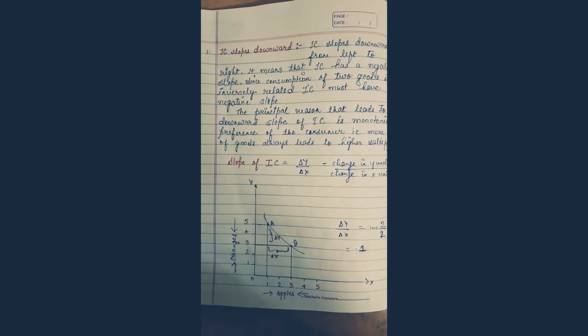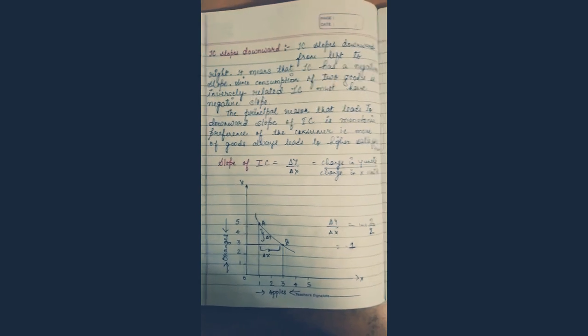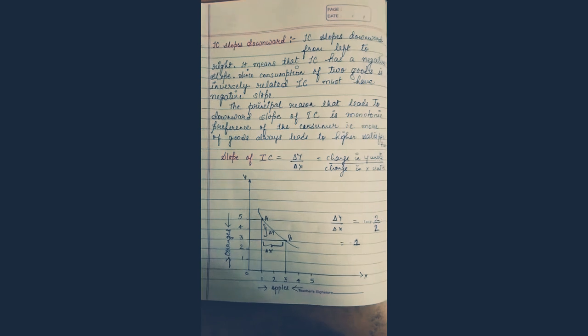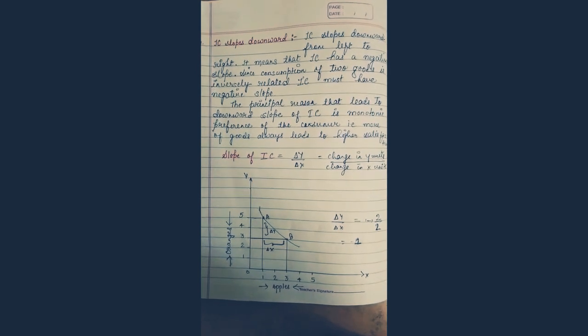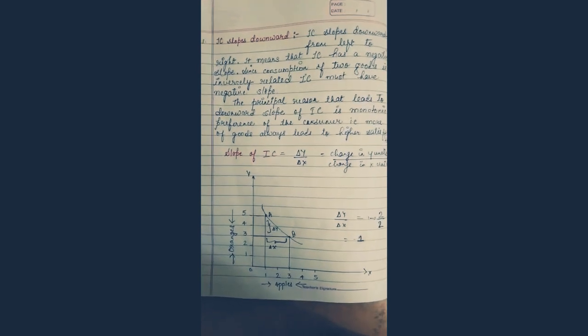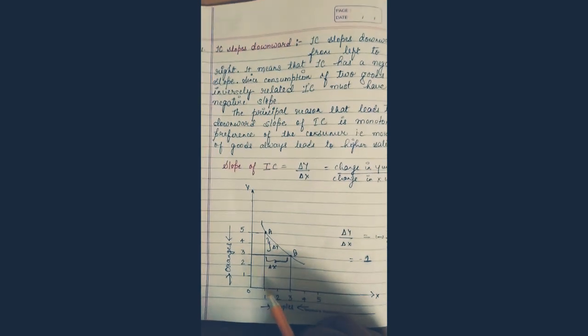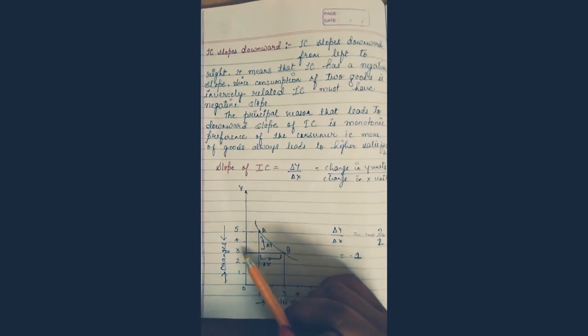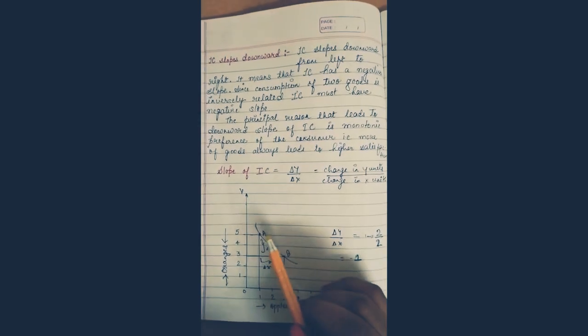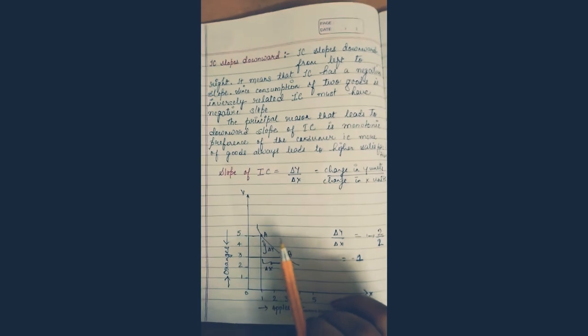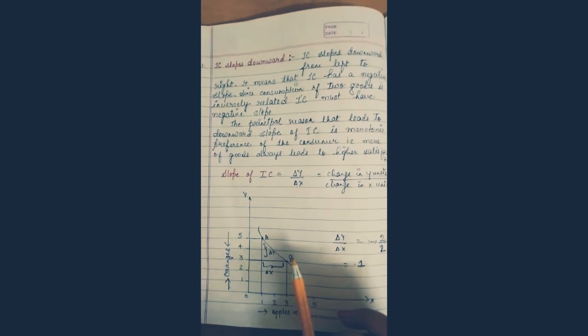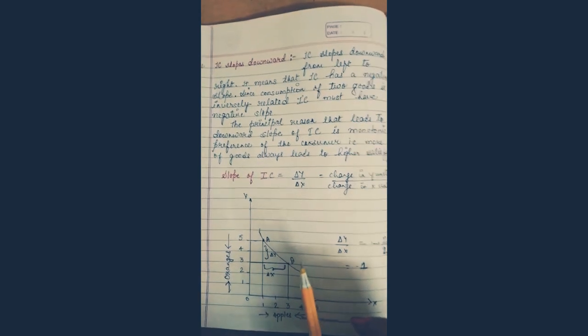IC slopes downward from left to right. You can see in the diagram that it slopes from left to right and has a negative slope. IC has negative slope because consumption of two goods is inversely related. To consume more of good X, you must decline the consumption of good Y. To increase the consumption of apples from one to three, the consumption of oranges declined from five to three — this is the inverse relation, which is why IC is negatively sloped.